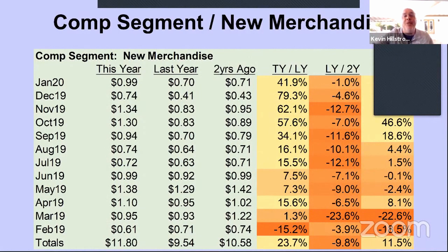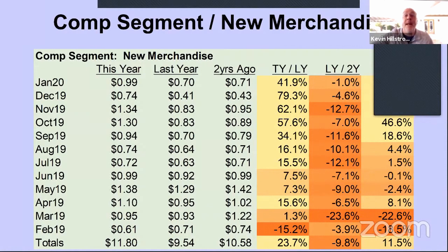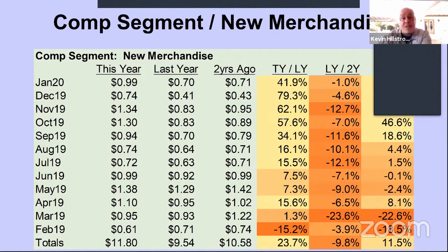I did my comp segment table for new items and for existing items. For new merchandise, in April 2019 something changed and customers were buying a lot more new merchandise than the year before. By September, October, November, December 2019 and January 2020, customers are spending a ton more on new merchandise. So now I know that the merchandising team has made a change, and that change is now contributing to better customers starting to spend more.